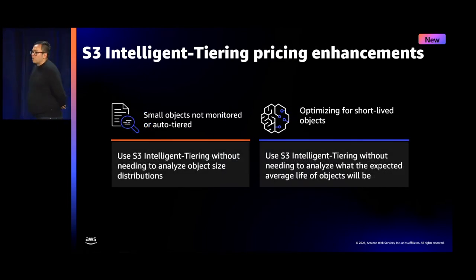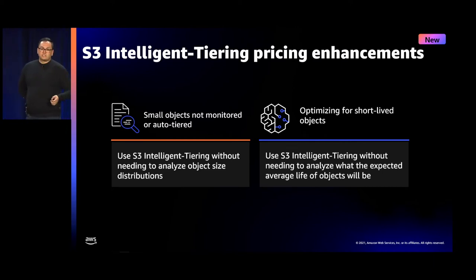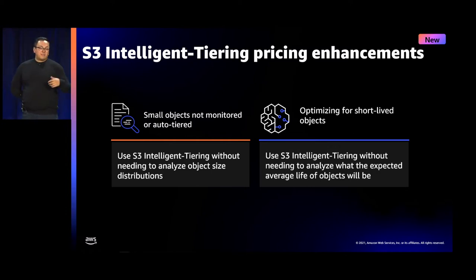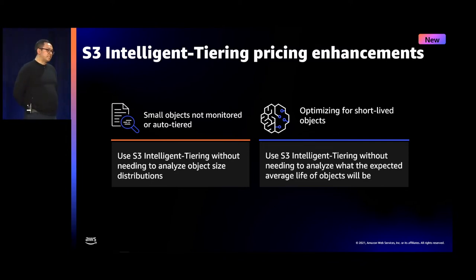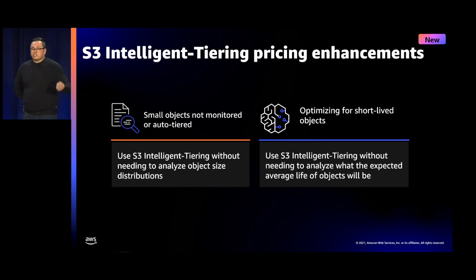I want to call attention to two other pricing innovations we recently launched within the Intelligent Tiering storage class. First, any objects smaller than 128 kilobytes that are not eligible for auto-tiering within Intelligent Tiering are not monitored or charged. Second, if you have staging workflows where you delete data within the first 30 days, these workflows will not incur early deletion charges within Intelligent Tiering — Intelligent Tiering no longer has a storage duration minimum period. Many customers told us they're increasingly using Intelligent Tiering as their default storage class for data analytics and data lake use cases, and they don't want to have to analyze object size distributions or different lifespans. Now customers can use Intelligent Tiering for these workflows without incurring any additional operational overhead.